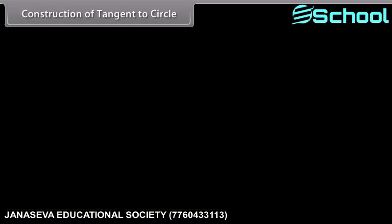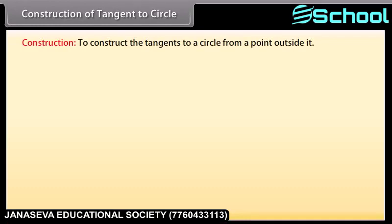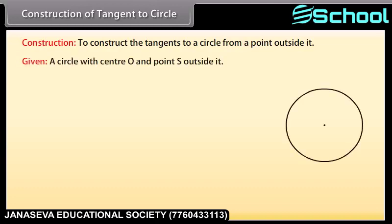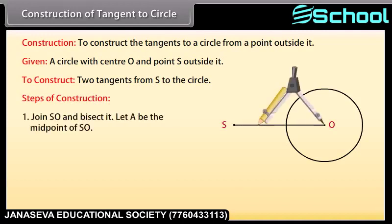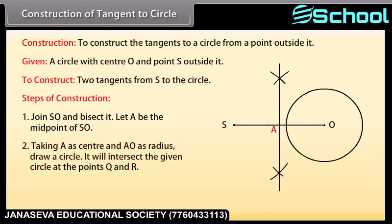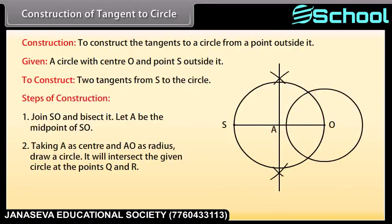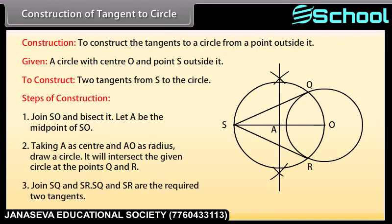Construction of tangents to a circle from a point outside it: we are given a circle with center O and a point S outside it. We have to construct the two tangents from S to the circle. Steps of construction: Join SO and bisect it. Let A be the midpoint of SO. Taking A as center and AO as radius, draw a circle. It will intersect the given circle at the points Q and R. Join SQ and SR. SQ and SR are the required two tangents.